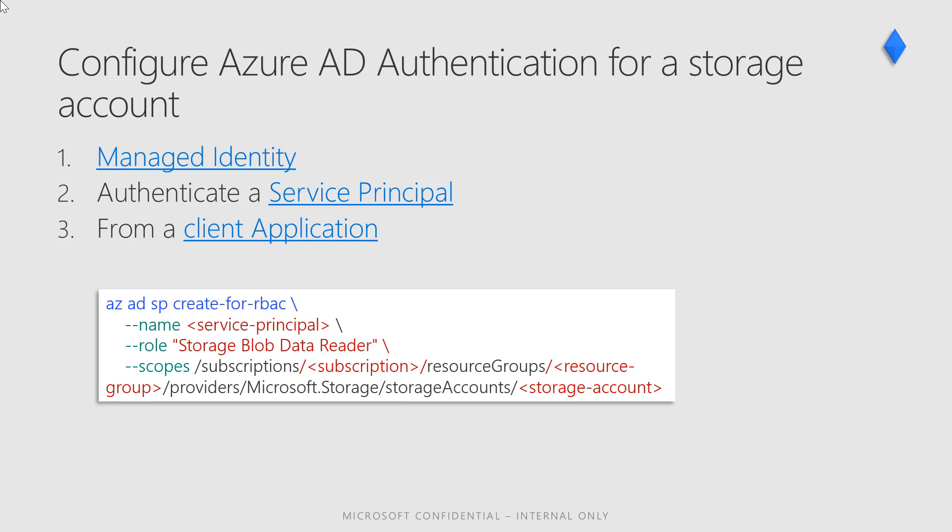If your development environment does not support single sign-on or log-on via a web browser, then you can use a service principal to authenticate from the development environment. To create a service principal with Azure CLI and assign an Azure role, call the az ad sp create-for-rbac command. Provide an Azure storage data access role to assign the new service principal, and provide the scope for the role assignment. This example uses the Azure CLI to create a new service principal and assign the Storage Blob Data Reader role to it with an account scope. A key advantage of using Azure Active Directory with Azure Blob Storage or Queue Storage is that your credentials no longer need to be stored in your code.